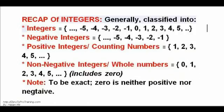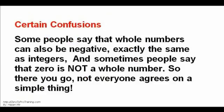Integers are also classified as non-negative integers, whole numbers, and zero. Note: some people say that whole numbers can also be negative — exactly the same as integers — and that zero is not a whole number. So not everyone agrees on a simple thing like this.